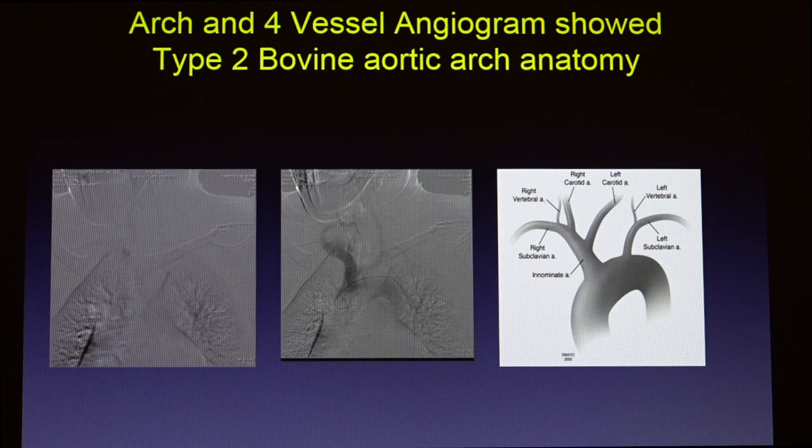Interestingly, 'bovine arch' is a misnomer — bovine actually does not have that kind of anatomy; they have one big vessel from which all carotids emerge. But for some reason, this anatomy in humans has been labeled bovine. Regarding the biggest challenge in this case — it was actually the patient herself, still recovering from the stroke, getting confused and not lying still. The image quality suffered because of that. During these procedures I don't like to use sedation, so the patient is completely awake, making it difficult to keep her hand controlled. We had to restrain her wrist and check neurological status every two to three minutes to ensure she wasn't having a TIA or stroke.